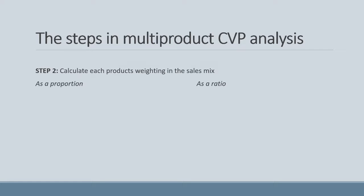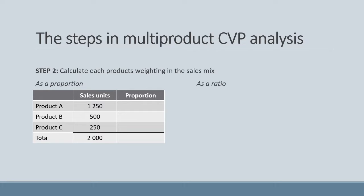Let us begin with the proportion method — we are expressing the sales units for each product as a percentage of total sales. Product A is 0.625 or 62.5% of total sales, product B is 25% of total sales, and product C is 12.5% of total sales. I have expressed the proportion as a decimal to show that we are effectively creating a batch of one unit.